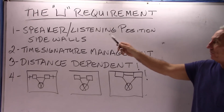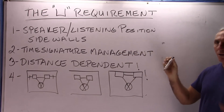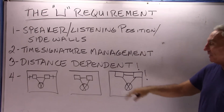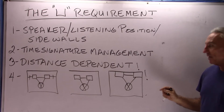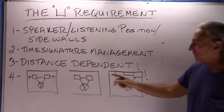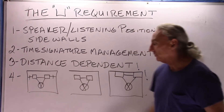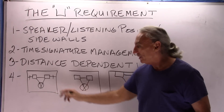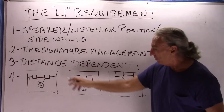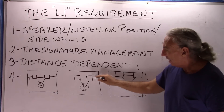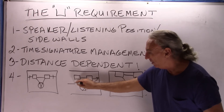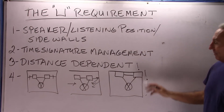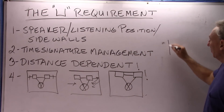The U requirement is the speaker, listening position, and the sidewalls — the relationship between the speakers and the sidewall. There is a time signature that we have to recognize between our sidewalls and our speakers, because at the listening position we are balancing direct energy from our speakers and reflected energy from room surfaces like sidewalls. So we have to be very careful, and thus the U.